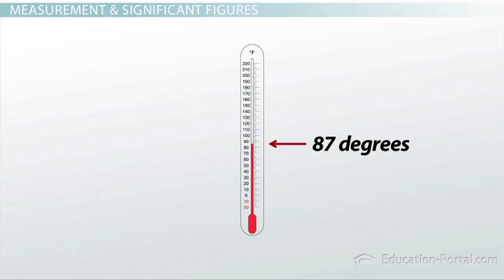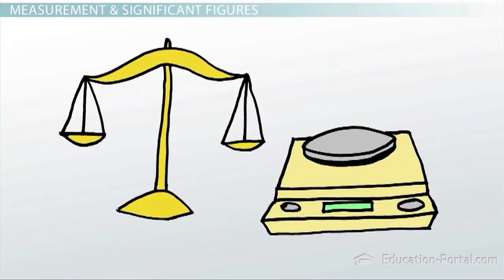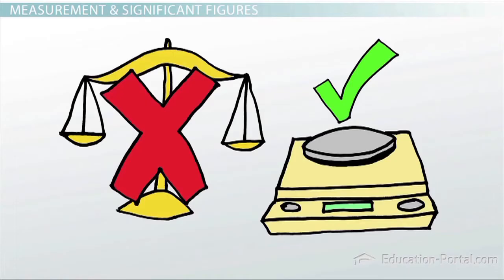If you have ever measured something more than once, you may have noticed that each time you may get a slightly different result. Anytime you make a measurement, there's some degree of uncertainty related to that measurement. This is because no measuring device is perfect. Usually, the more high quality the measuring instrument is, the more precise your measurement will be.